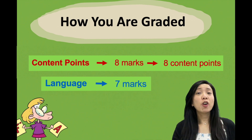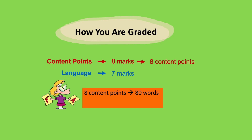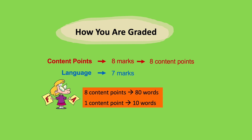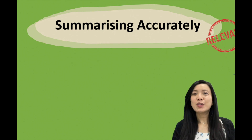So let's do a little bit of math here. As I mentioned, you would need at least 8 content points in your summary paragraph, and the word limit is 80 words. Therefore, for 1 content point, you should be writing about only 10 words. That should hopefully give you a good estimate of how much you should be writing for each content point.